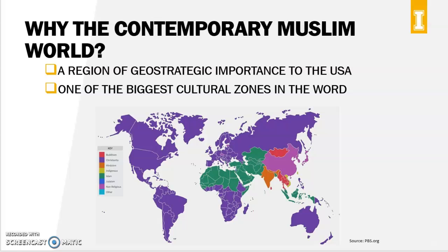The second reason is the sheer size and scope. Of the 10 countries in the world with the largest populations, seven of them have significant Muslim populations. Four of them are shown here in green: Indonesia, Pakistan, Nigeria, and Bangladesh. Nigeria is actually about 50% Christian and 50% Muslim. Russia, India, and China all have large Muslim populations as well.